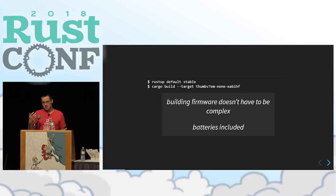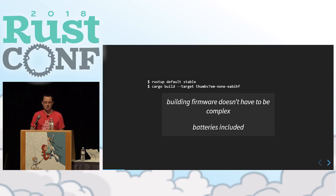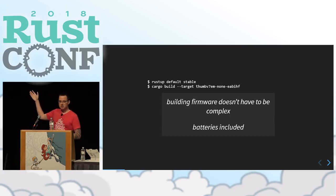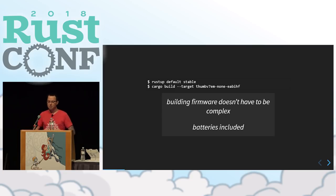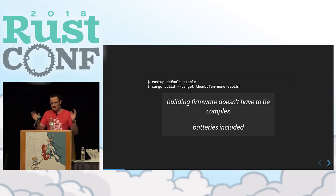With everything stabilizing in 2018, the goal of the embedded working group is that you can just install stable Rust, run cargo build for one of these microcontroller targets, and get a working binary. Building firmware doesn't have to be complex — the batteries are still included. You still have all the great things that come with Rust, and all you had to do was install it. No downloading tons of dependencies, no making sure you have the right version of GCC.